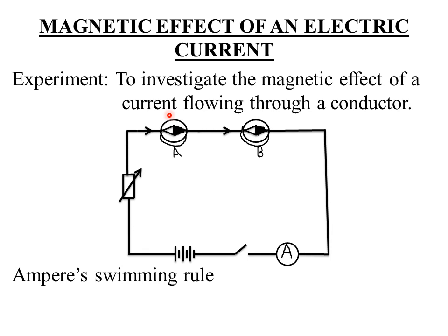Therefore, I expect needle A to deflect upwards — remember, for needle A the wire was passing above it. But needle B has the wire passing below it, so the direction of deflection of needle B actually reverses. If needle A deflected upwards, then automatically for B the needle would deflect downwards.